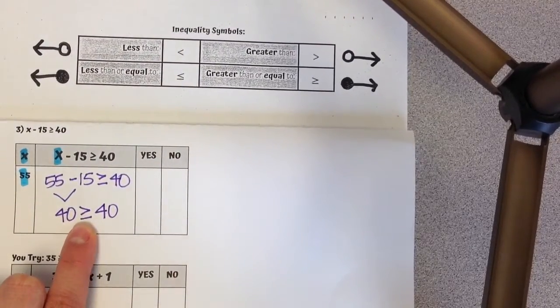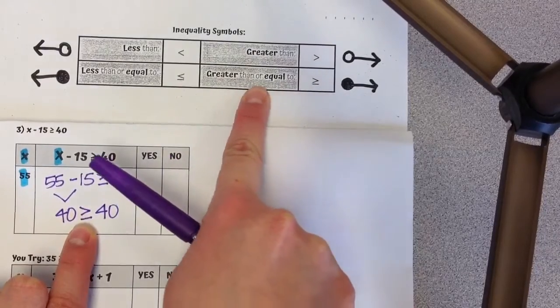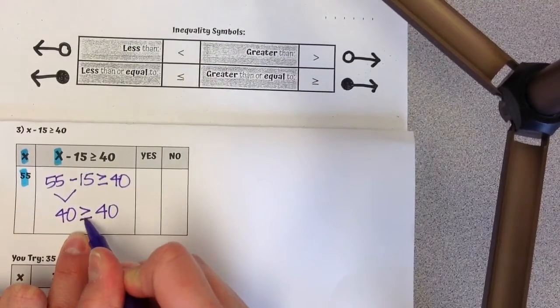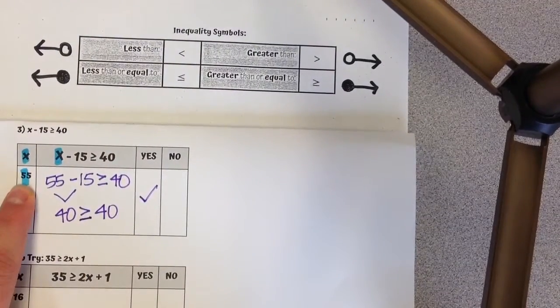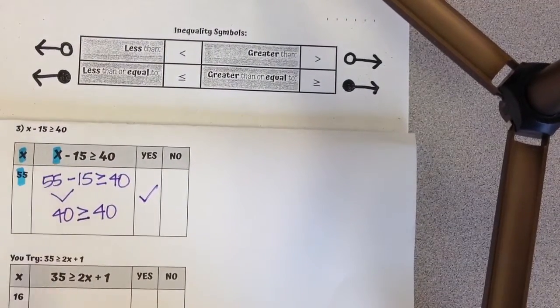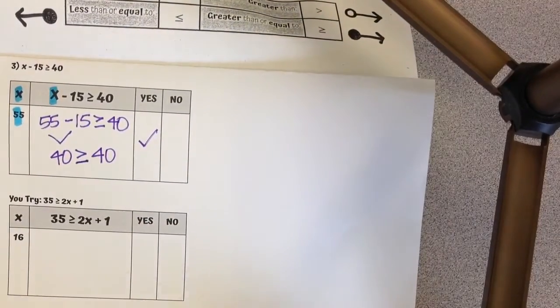Again, if you forget what the symbol means, I'm going to look over here. This symbol is the same as this, greater than or equal to. 40 is not greater than, but it is equal to 40, so yes, 55 is a possible solution. Go ahead and try the U-try and then get it checked by your teacher.